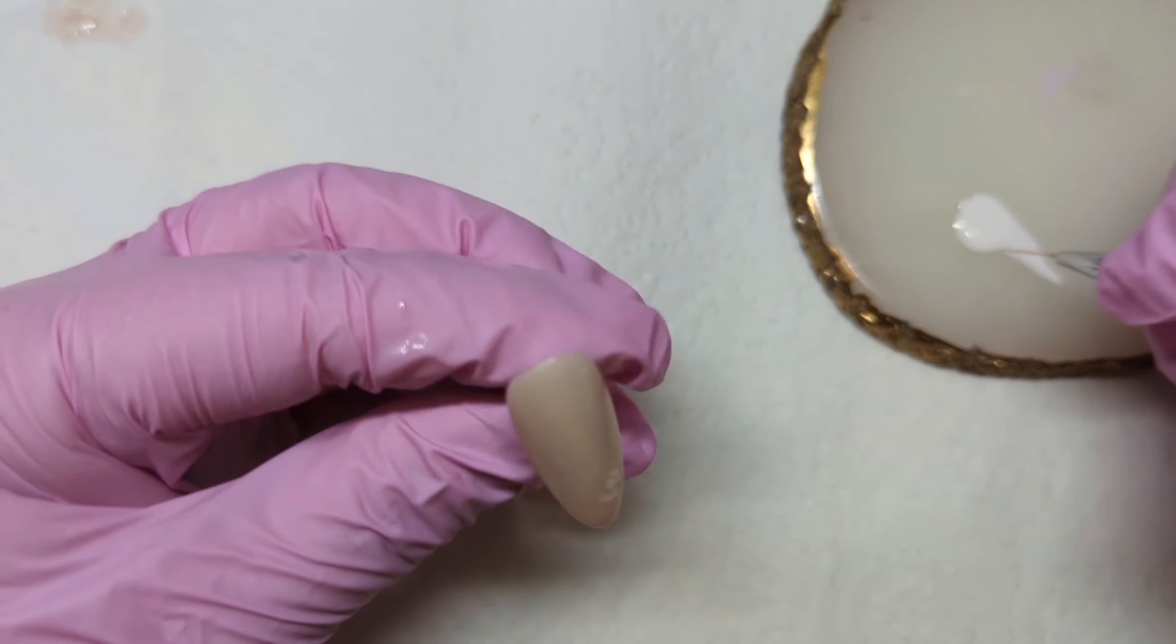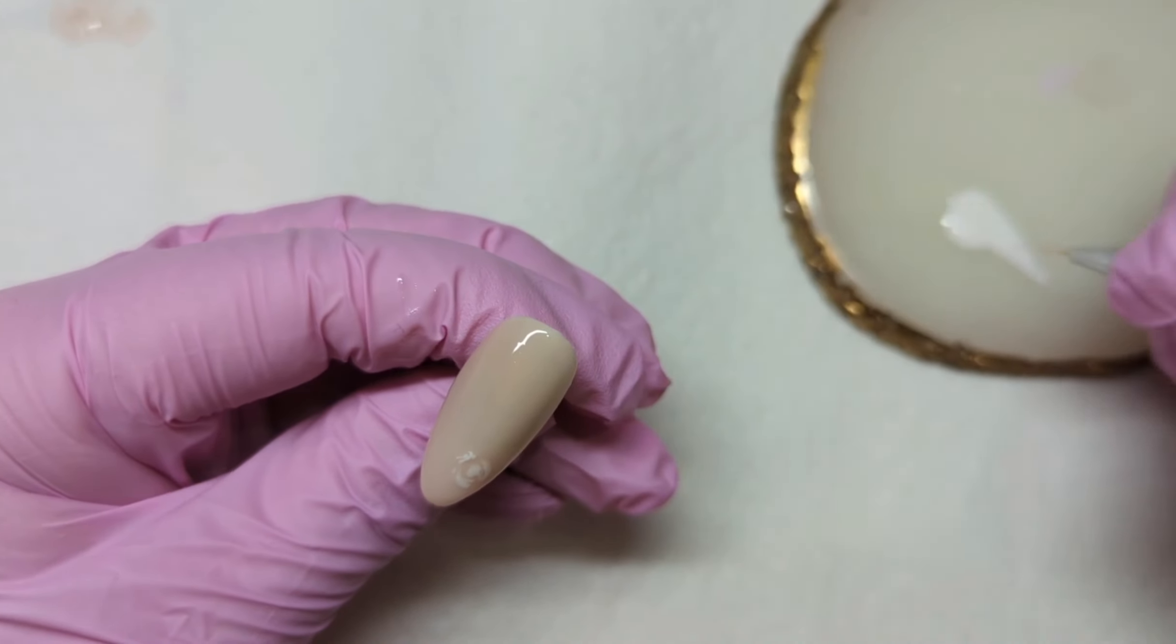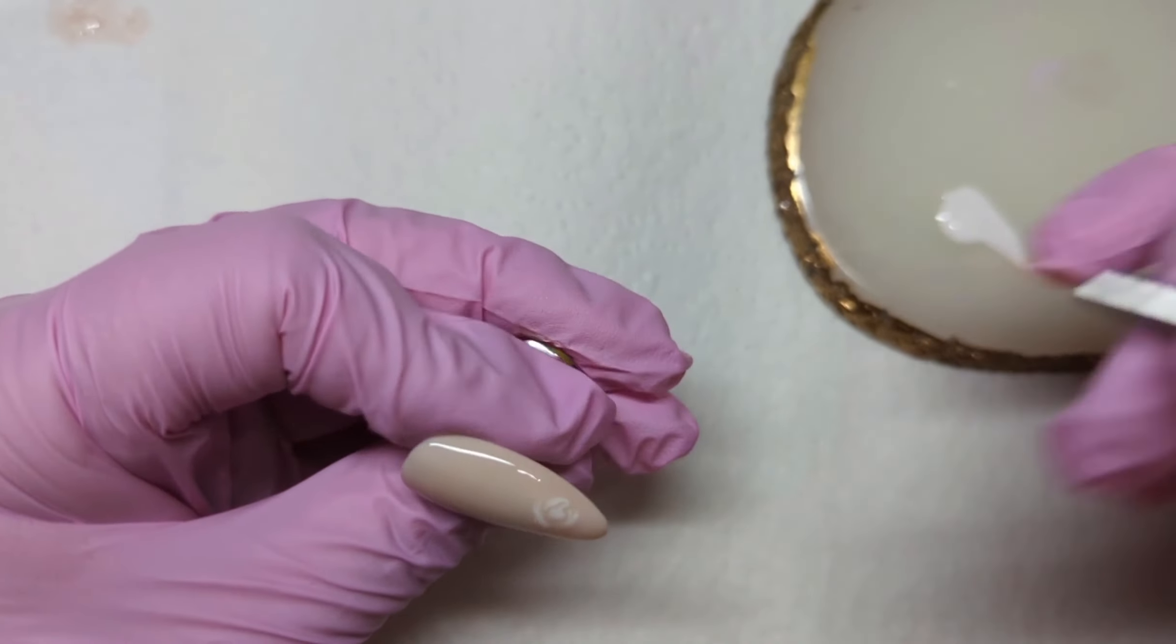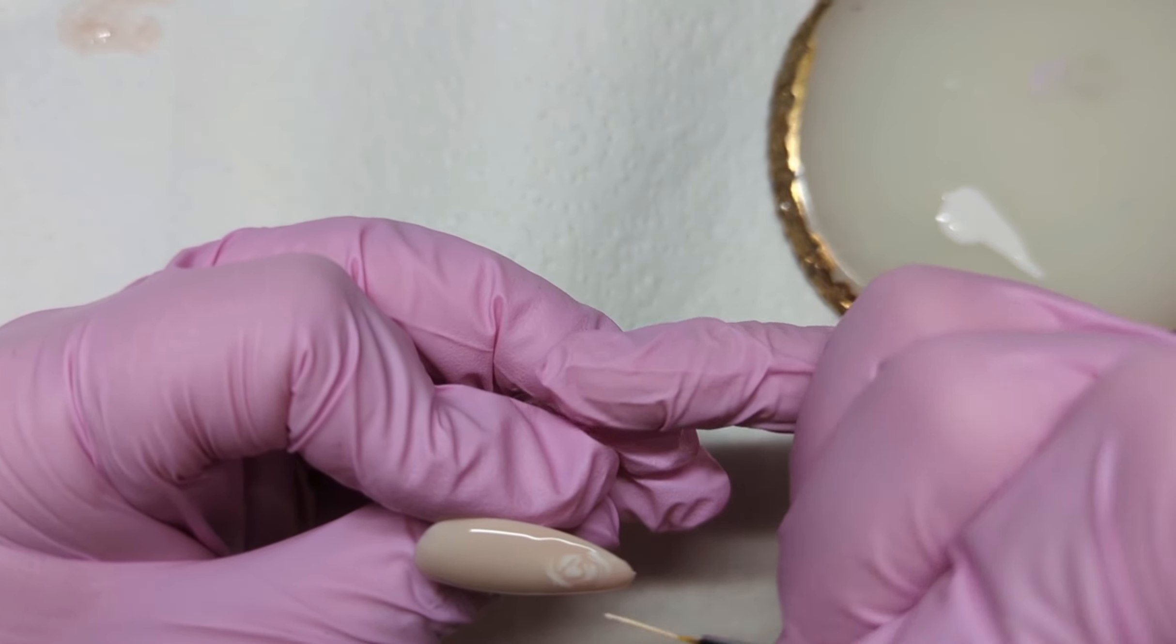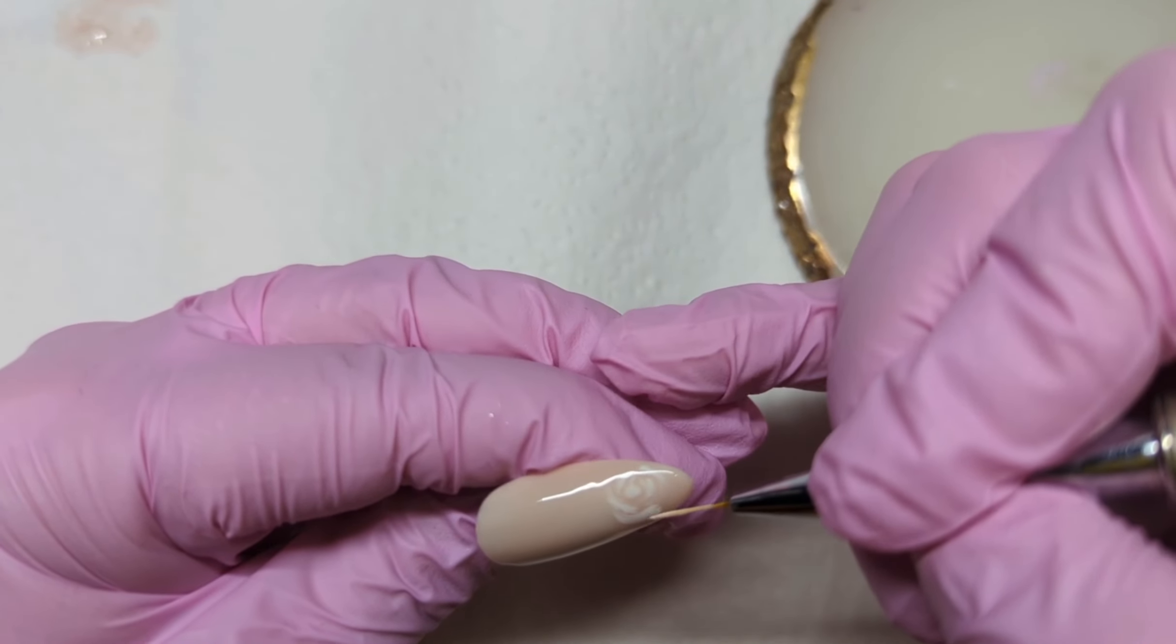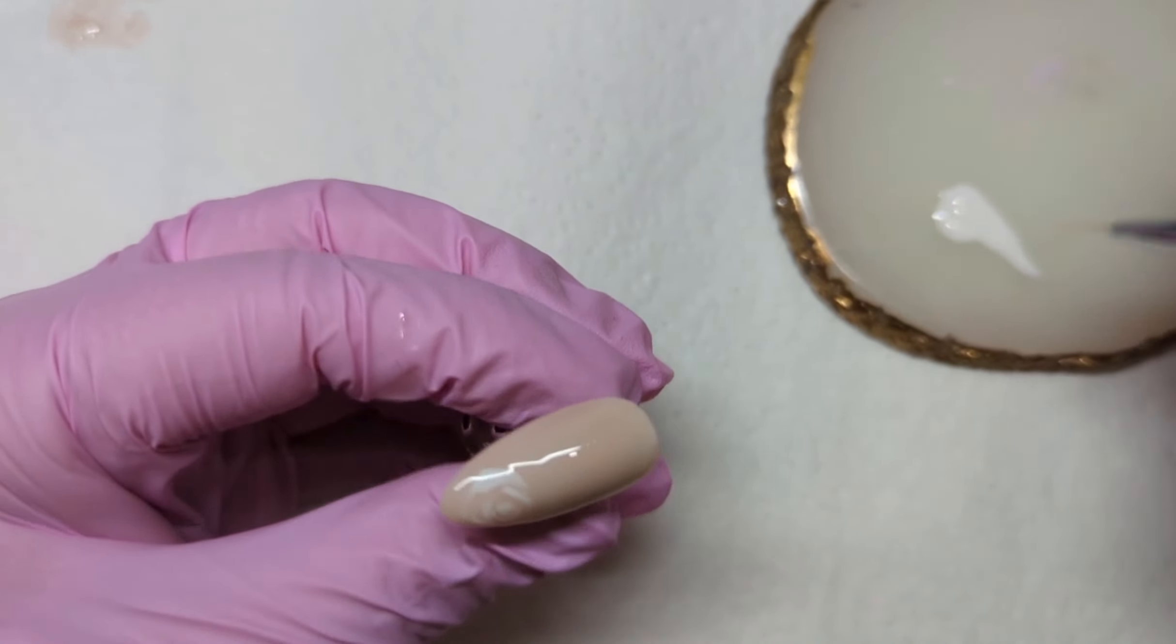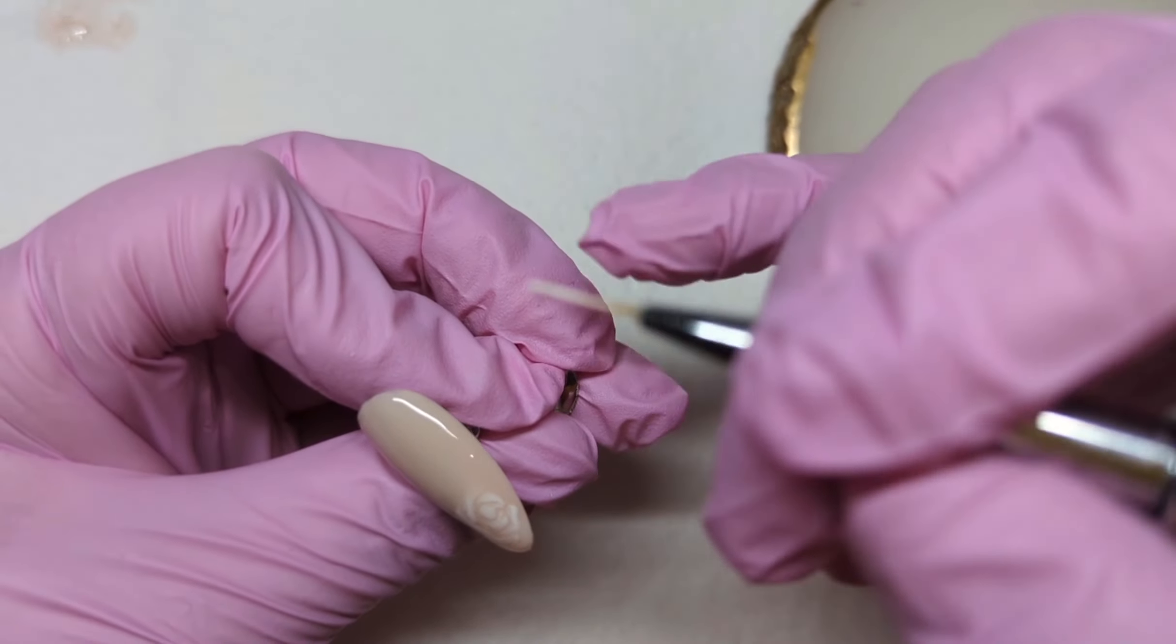Once I'm happy with my placement I just pop it in the lamp and cure it. For the second one, do another coat of blooming gel and obviously do not cure your blooming gel before you do this otherwise it's not going to work.